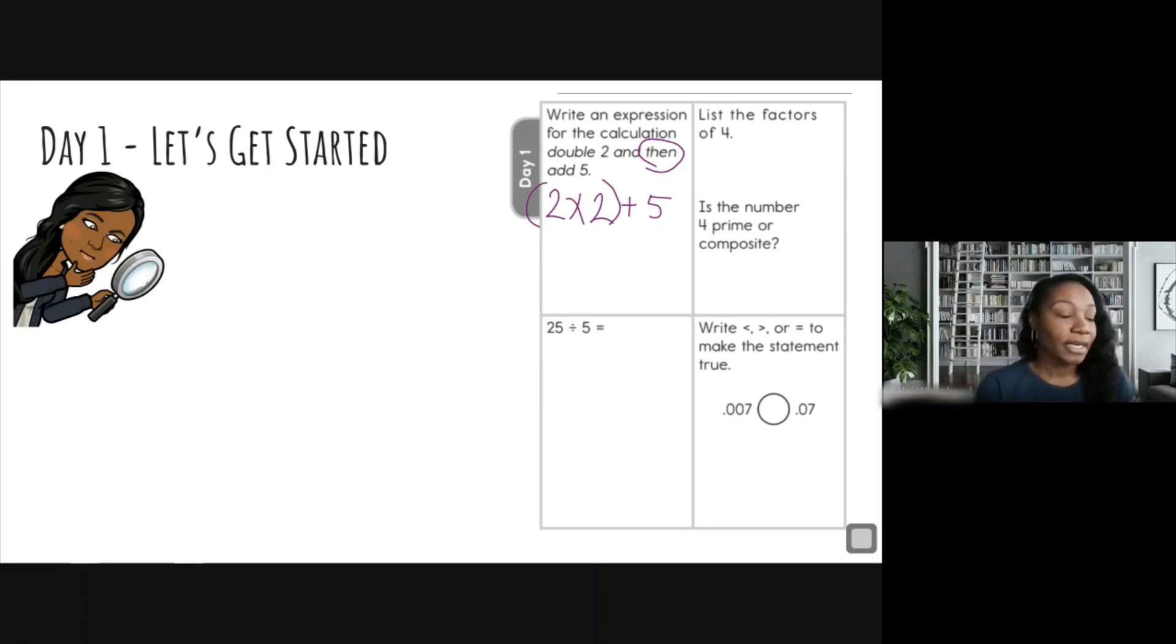If you took it a step further and actually solved the expression, good for you, you are awesome. So that would be two times two would be four, four plus five would be nine if you solved it. But we only needed to write an expression. All right, let's move on.